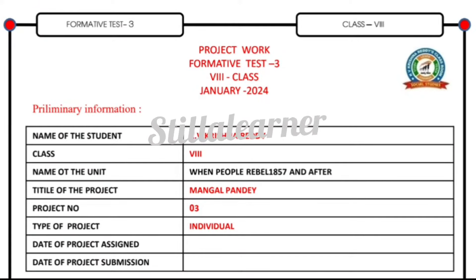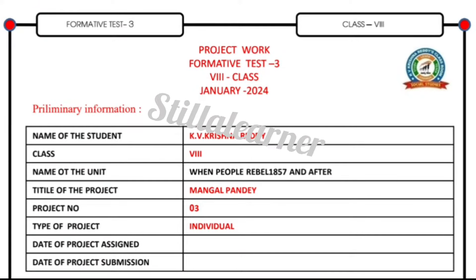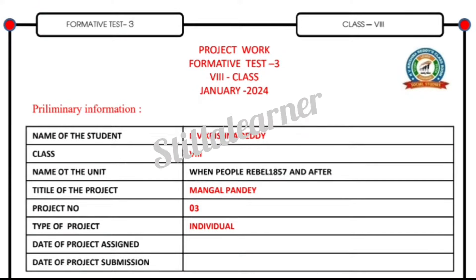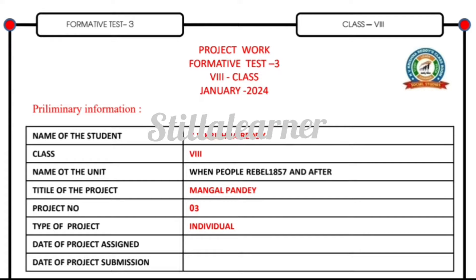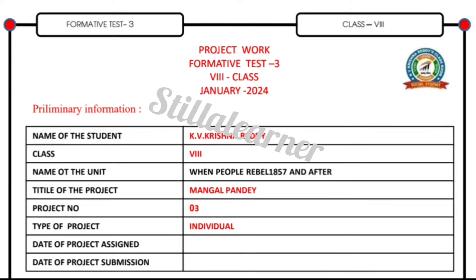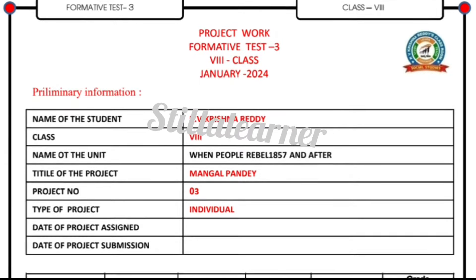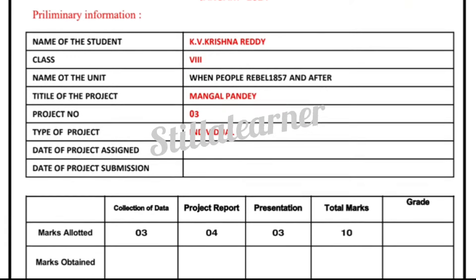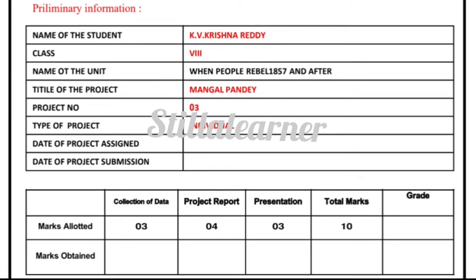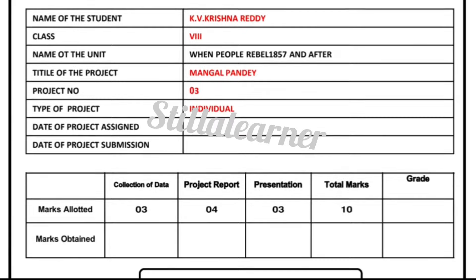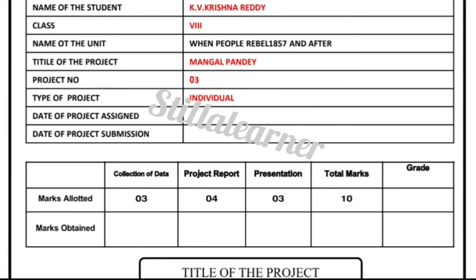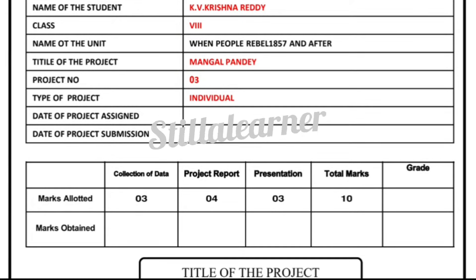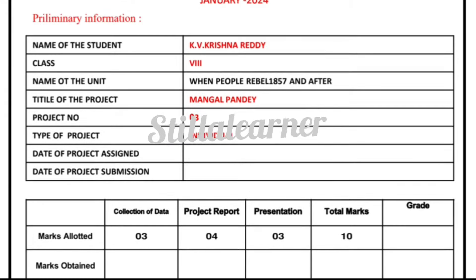Our unit is 'When People Rebel – 1857 and After.' Then the title of the project is 'Mangal Pande.' This is project number 3, and you have to do this project individually.